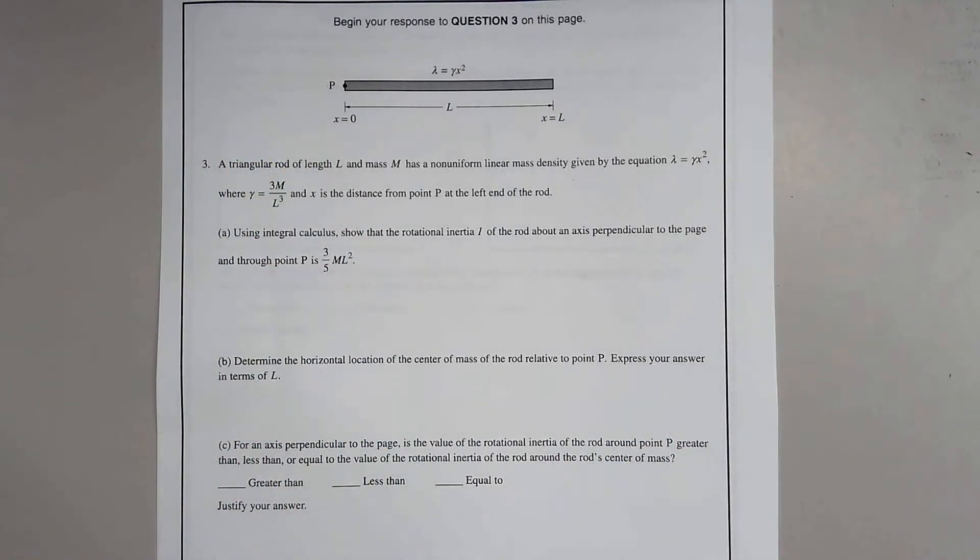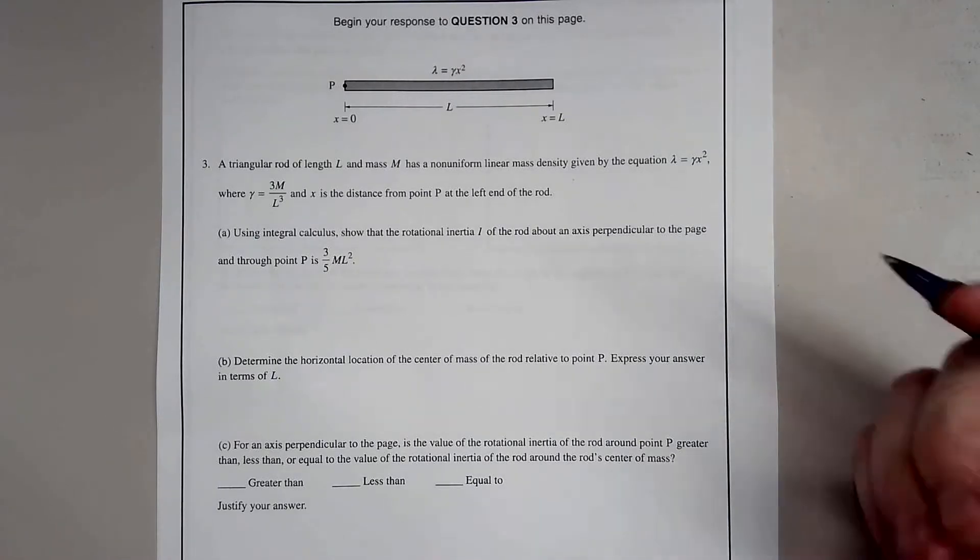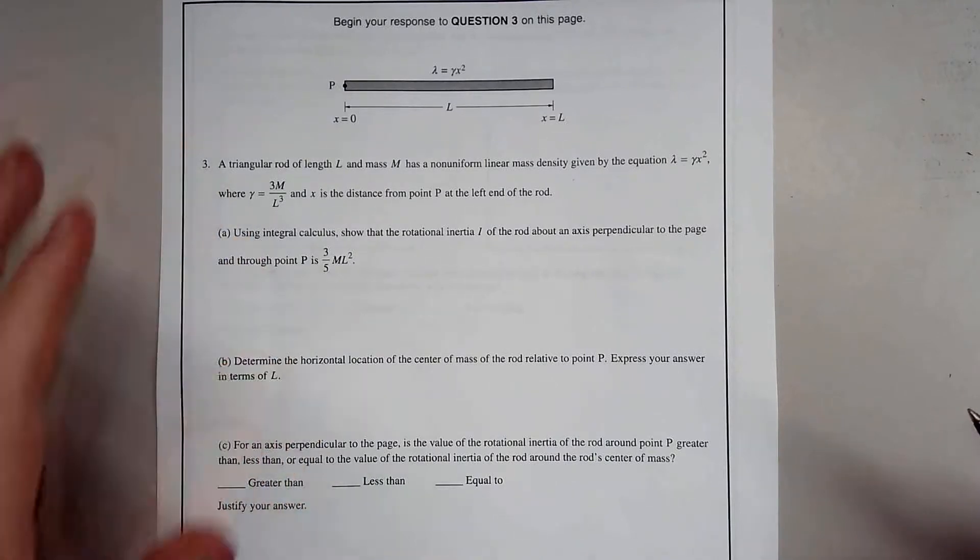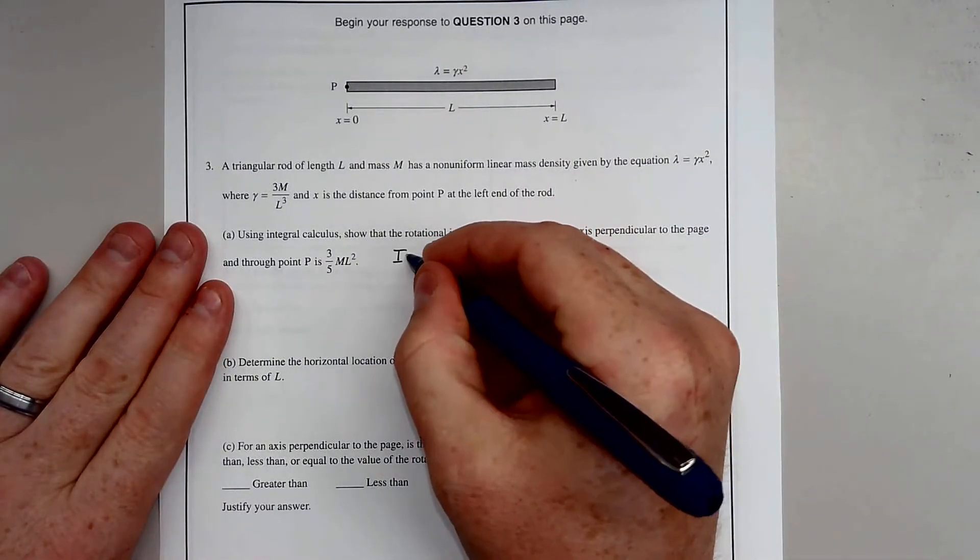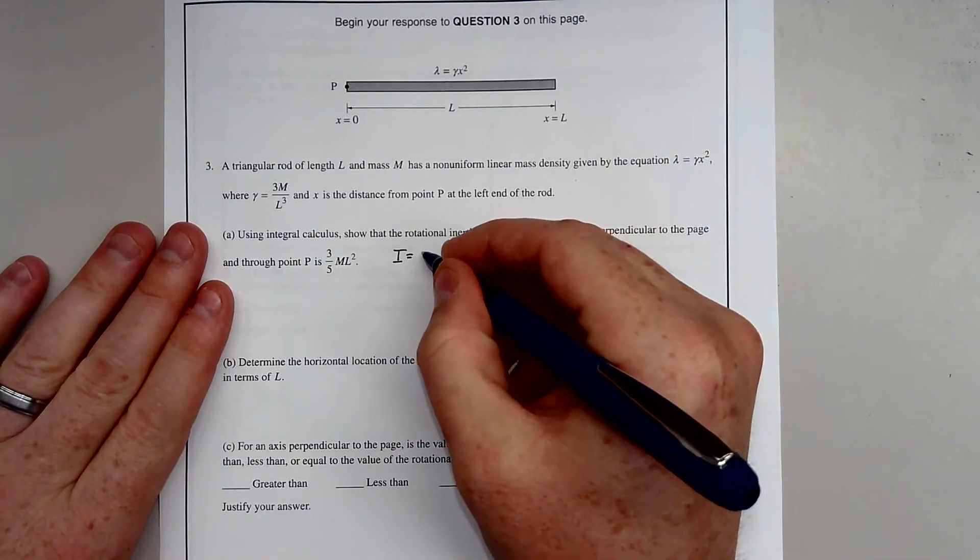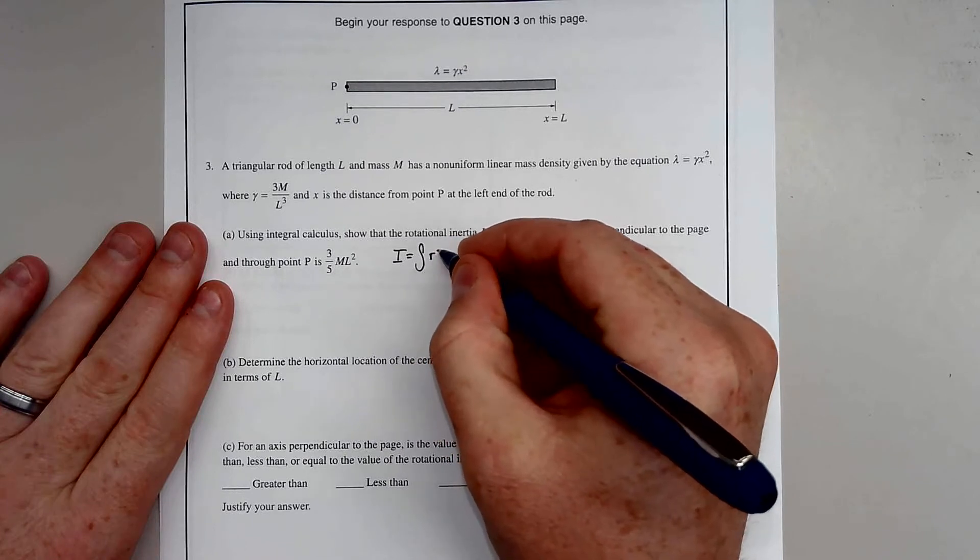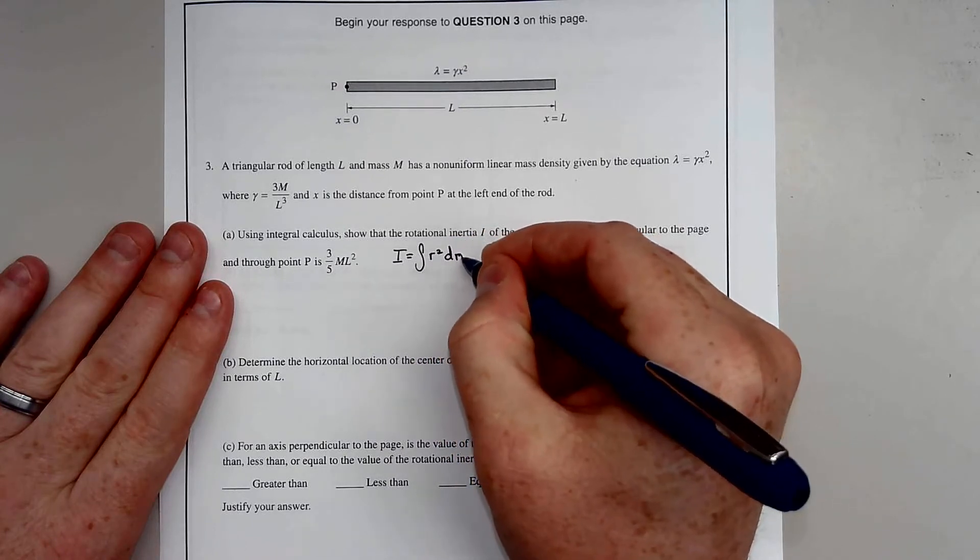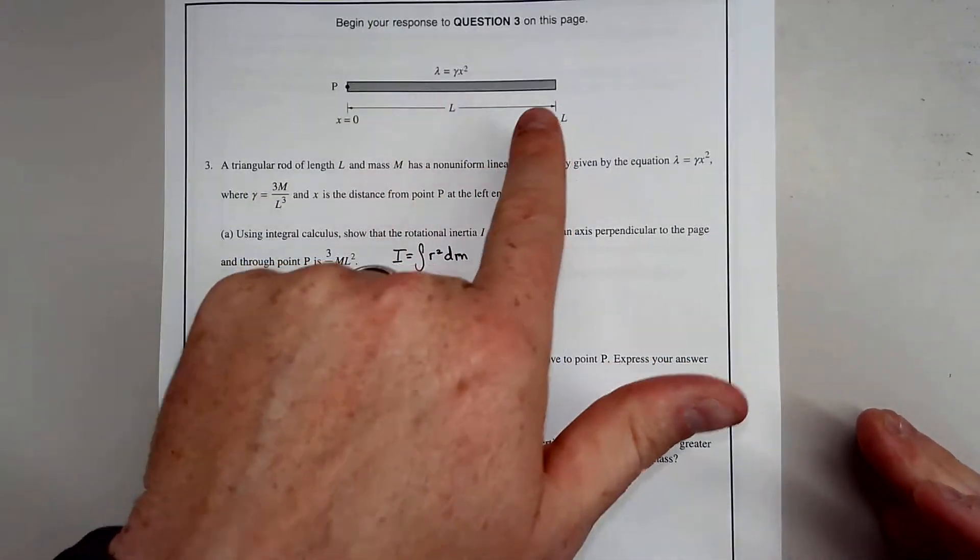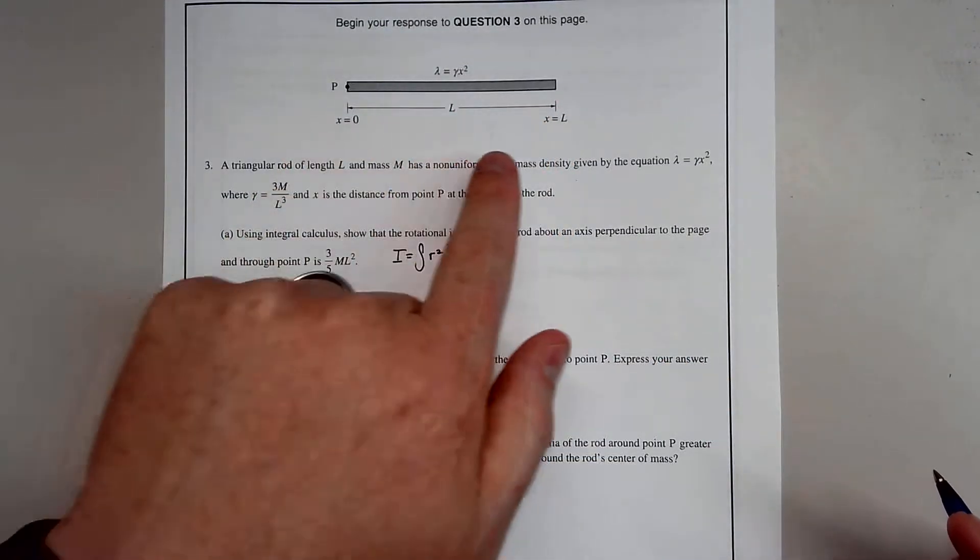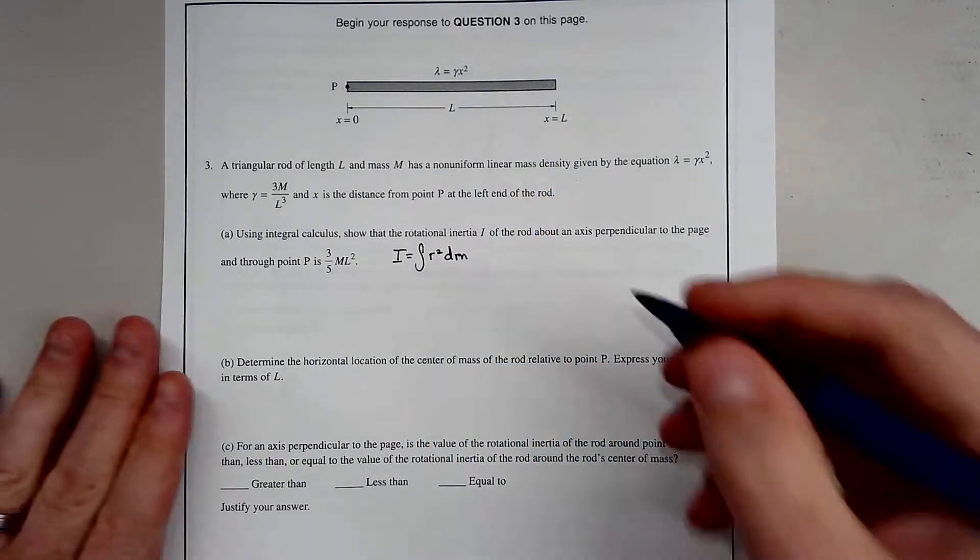Using integral calculus, show that the rotational inertia I of the rod about an axis perpendicular to the page and through point P is three-fifths ML squared. We know the moment of inertia equals the integral of R squared dM, where R in this case is X.